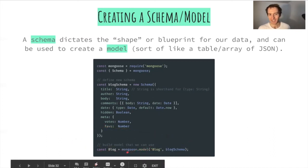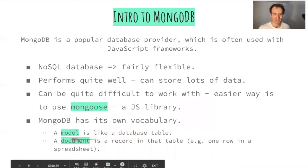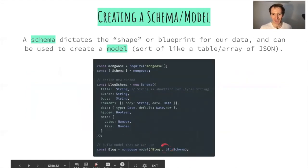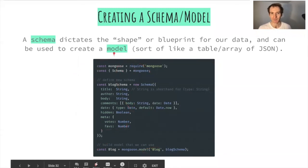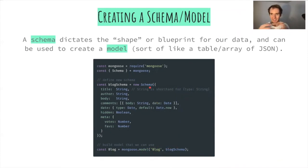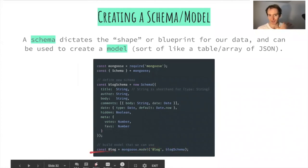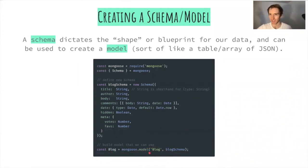We need to call mongoose.model to create a model out of a schema — passing in the model name ('Blog') and the schema as a blueprint. A model is like the database table. Typically we'll have a separate models folder containing all these schema files, which export the models, and these can then be imported into index.js.